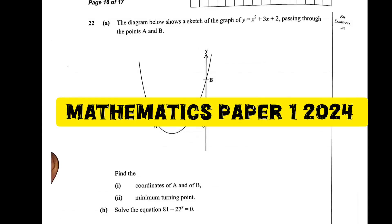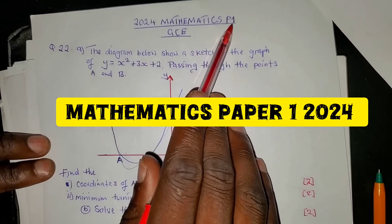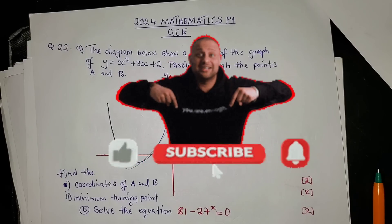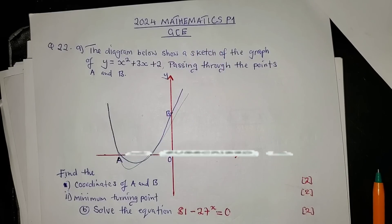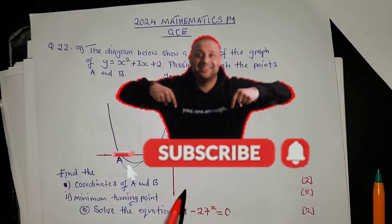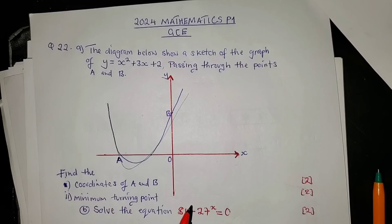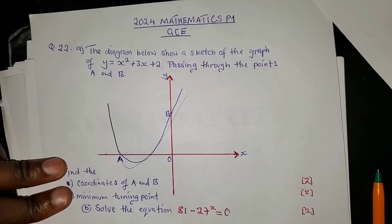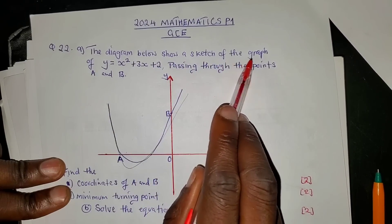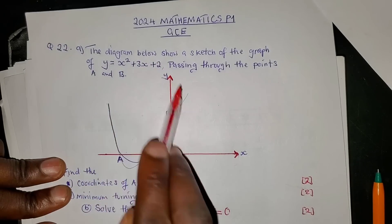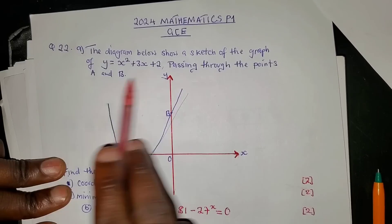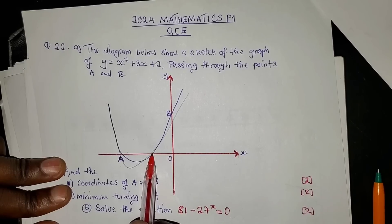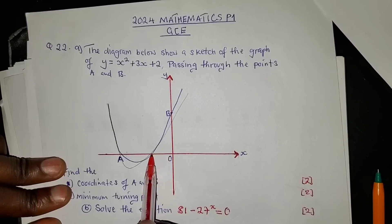Question 22 is part of the 2024 Mathematics Paper 1 GCE. It's worth six marks, so make sure you solve this — especially those writing in October/November and next year in 2025. The diagram below shows a sketch of the graph of y = x² + 3x + 2, passing through points A and B.